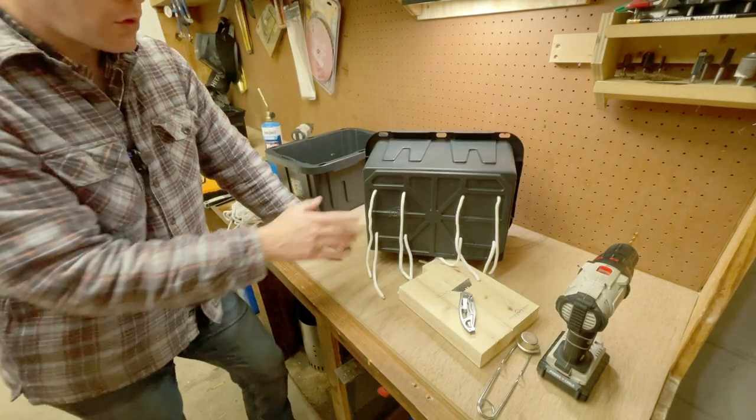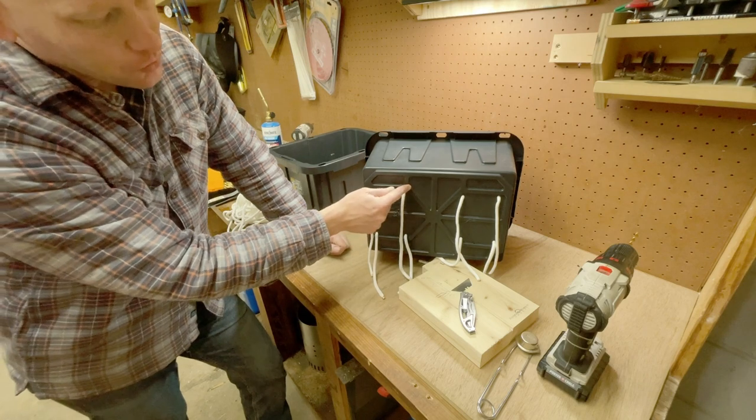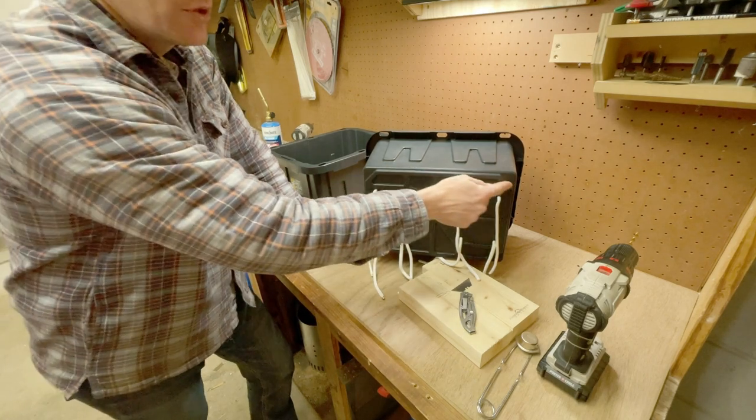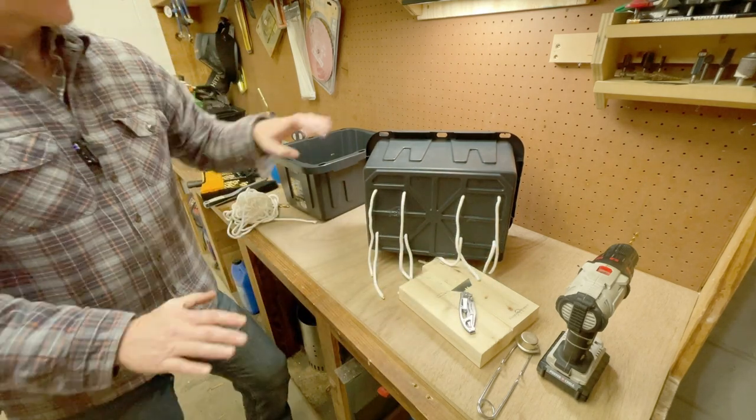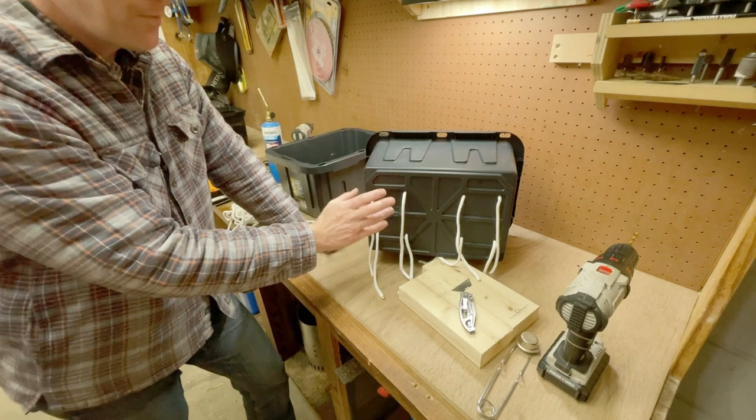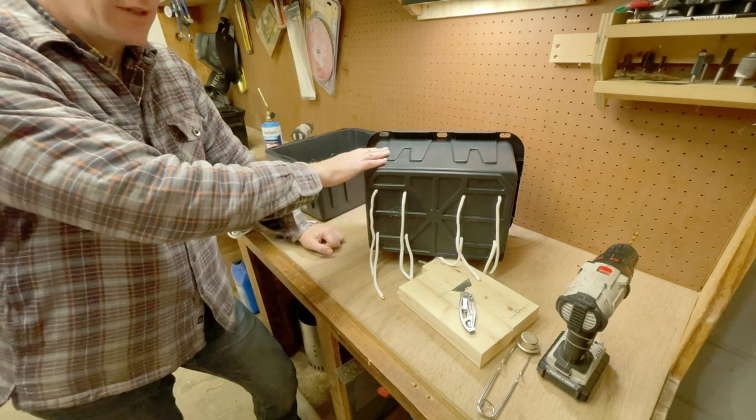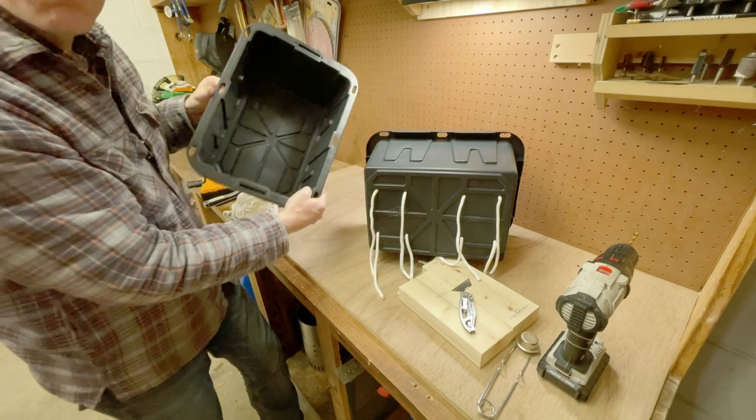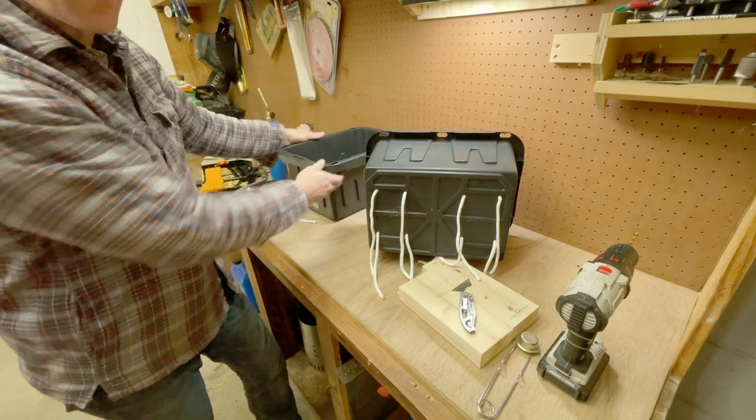Now that I've got all the wicks in place I'm going to go through on these lower channels and drill some small drain holes because what I want to happen is if these wicks are pulling too much moisture up into the system I want it to be able to drain back down into the nutrient reservoir.